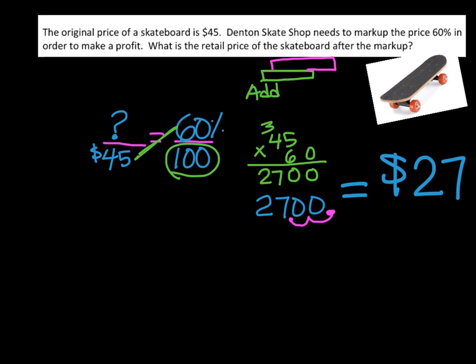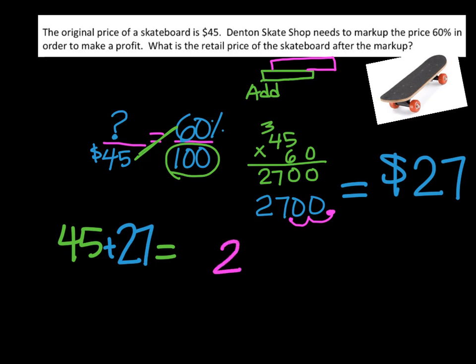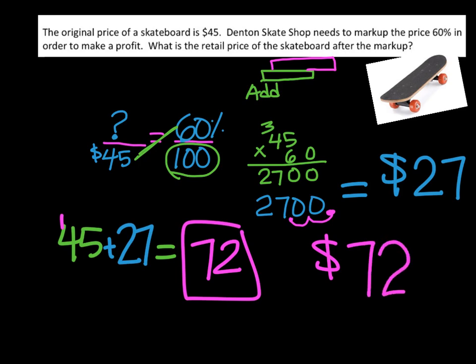Going back and reading the question — what is the retail price of the skateboard after the markup? The skateboard originally was $45. It's going to be more than $45, so we add the markup amount. The markup is $27, so we do 45 plus 27, which equals 72. The new retail price of the skateboard is $72.